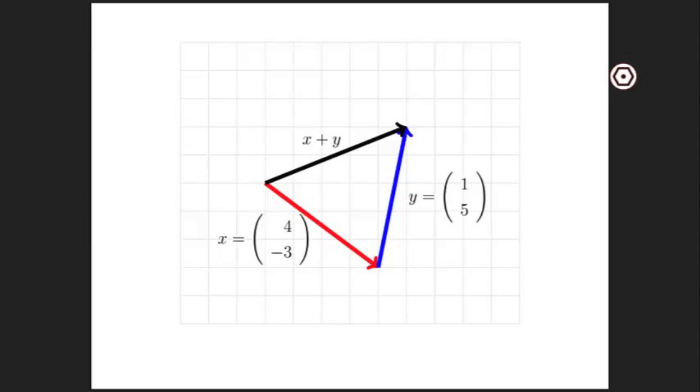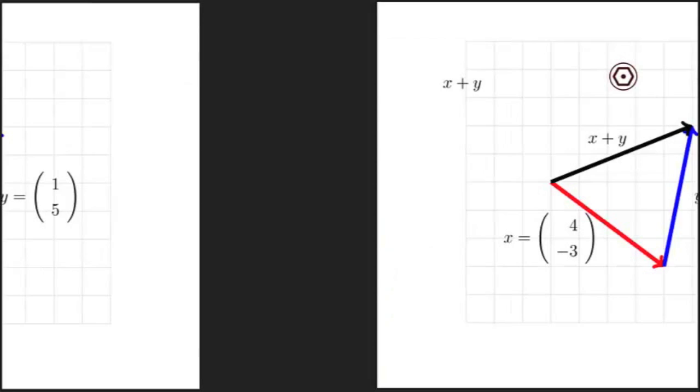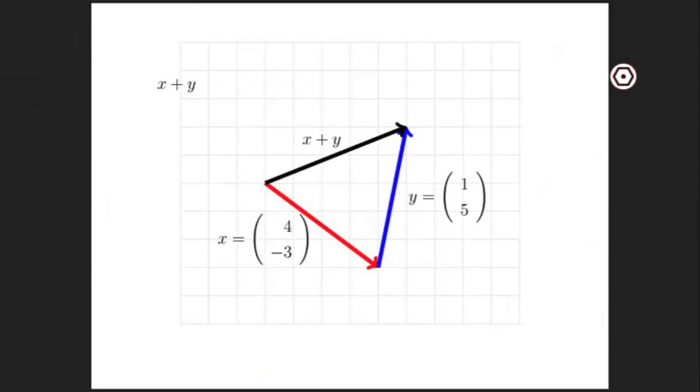The way to compute the vector that results in this way is to sum the components. So here we have vectors x and y. Vector x has components 4 and minus 3. Vector y has components 1 and 5.